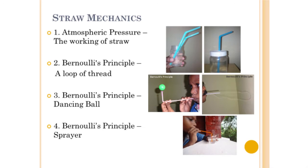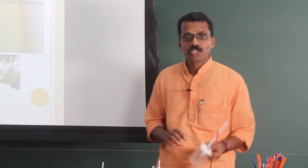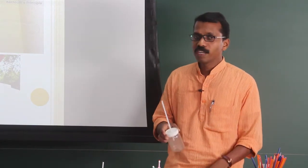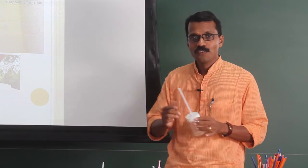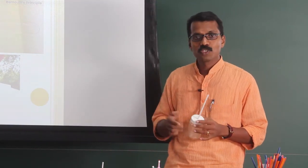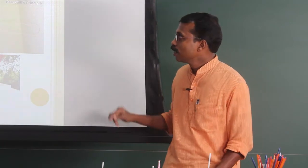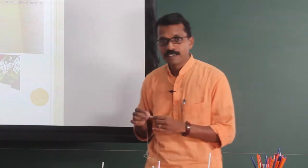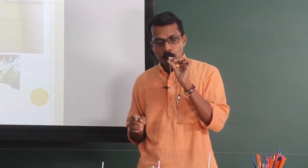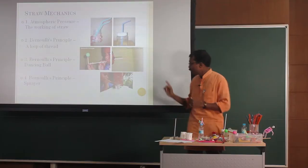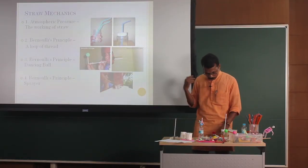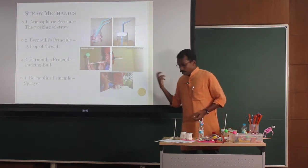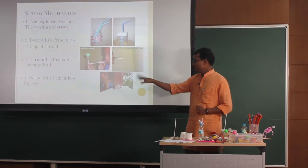Coming to the first part — finding the maximum experiments using straws — the first category is straw mechanics. The first experiment demonstrates atmospheric pressure: the atmosphere exerts a pressure, and in a closed container we cannot drink with a straw because the atmosphere cannot exert pressure there. Next is Bernoulli's principle with a straw and thread — if we blow it, we can create a loop. There is a sprayer also, and a ball can be made to dance using Bernoulli's principle.